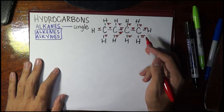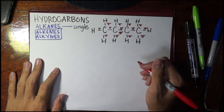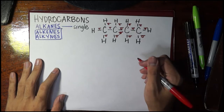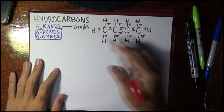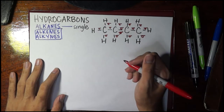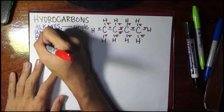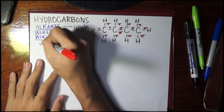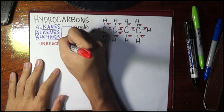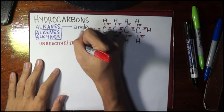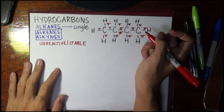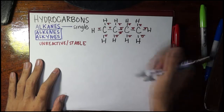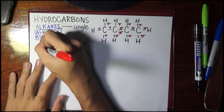We have a bunch of sigma bonds here, and that means alkanes are generally very stable. There is no bond that we could easily break, unlike if we have a double or triple bond — in a double bond there is a pi bond which is easier to break. Therefore alkenes and alkynes are more reactive. Alkanes are relatively unreactive because they are very stable. Another general property of all hydrocarbons is that they are quite non-polar.